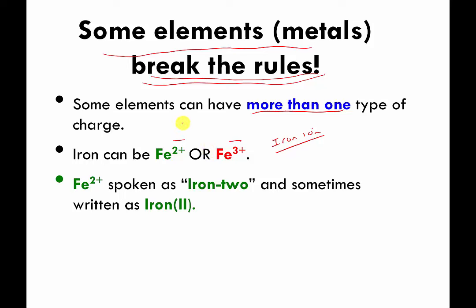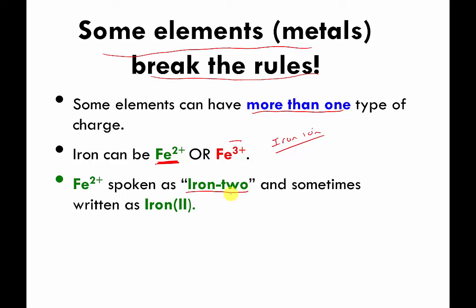You don't have to do that for a lot of the other elements we talked about before. If I said I have a lithium ion, you always know it's going to be plus one. If I say I have a fluoride ion, you know it's always going to be negative one. However, for a lot of metals you have to tell people which one you're working with. If you were going to speak it out loud, you would call it 'iron two' or 'iron three' — saying the number tells people which charge your iron has.